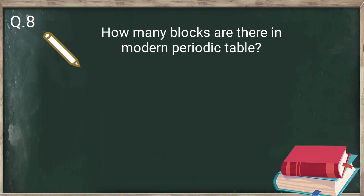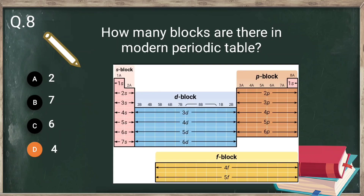Question number 8: how many blocks are there in the modern periodic table — 2, 7, 6, or 4? There are 4 blocks in the modern periodic table: S, P, D, and F block. The periodic table is divided into 4 blocks based on the last sub-shell that is under completion. For example, elements in the S block have S as their last sub-shell.